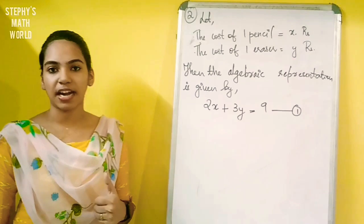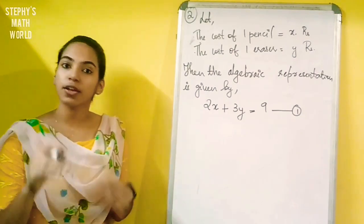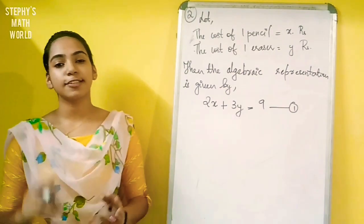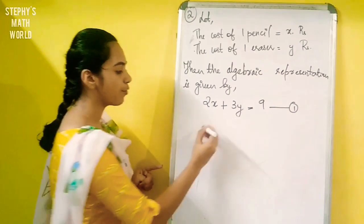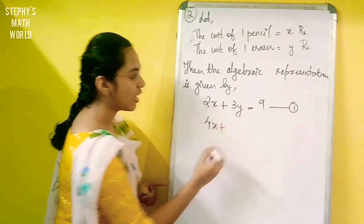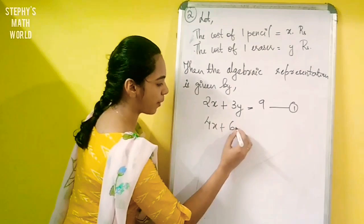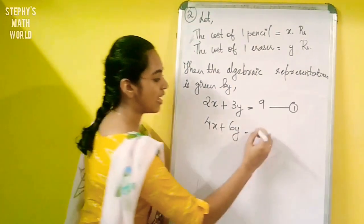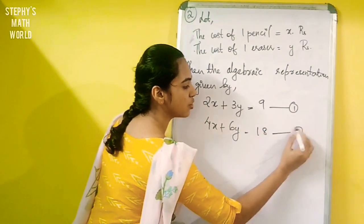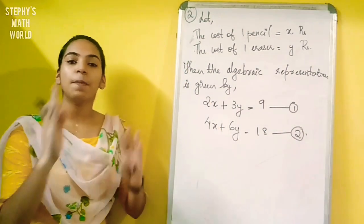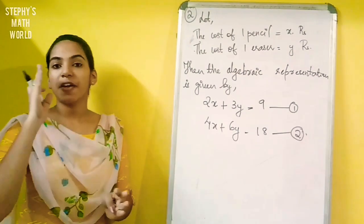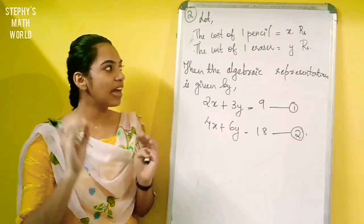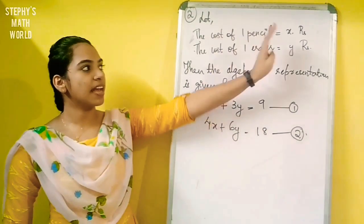Now for the second case, Sonali bought four pencils and six erasers. So 4x plus 6y is equal to 18. That is equation 2. We now need to divide it into x and y to solve.